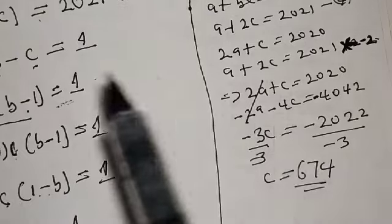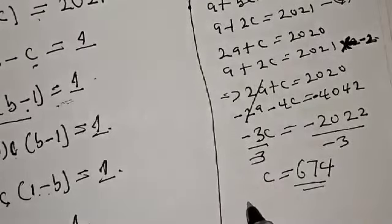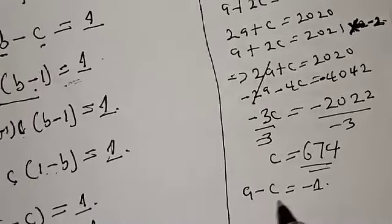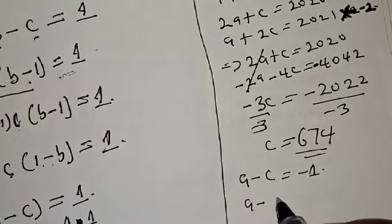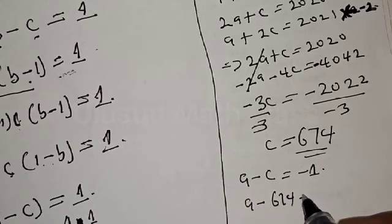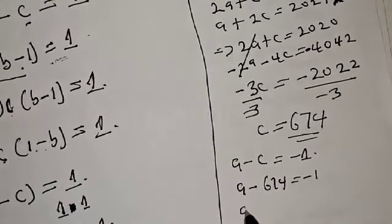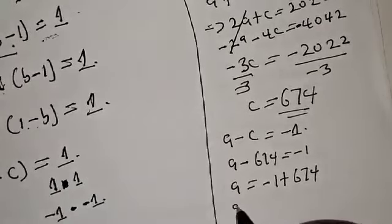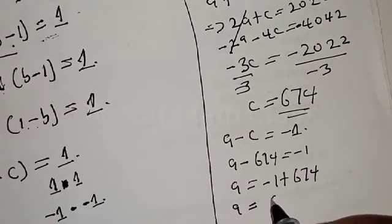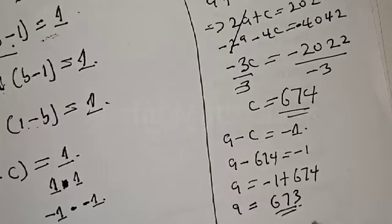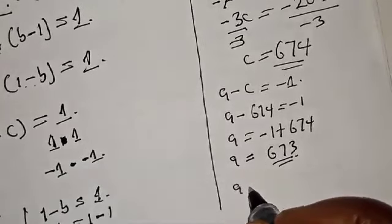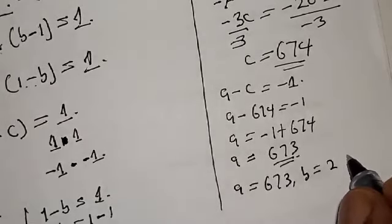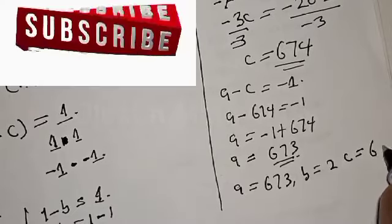Now that C equals 674 and B equals 2, we substitute into A minus C equals minus 1: A minus 674 equals minus 1, so A equals minus 1 plus 674, giving A equals 673. Therefore, from the second case, we have A equal to 673, B equal to 2, and C equal to 674.